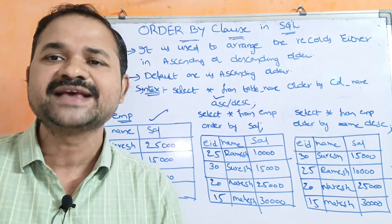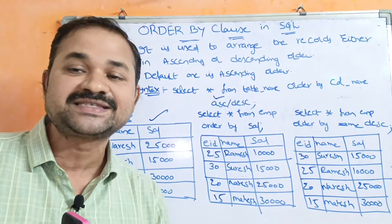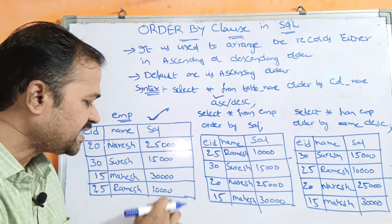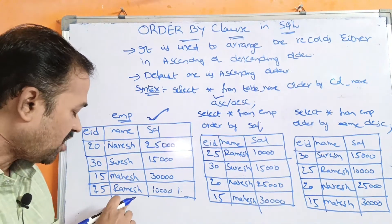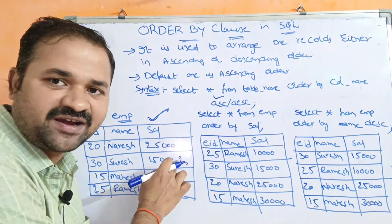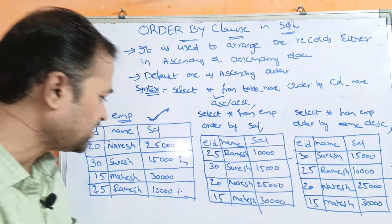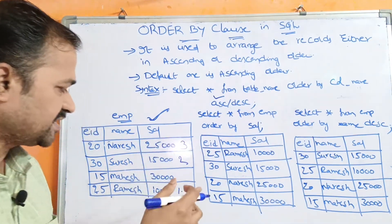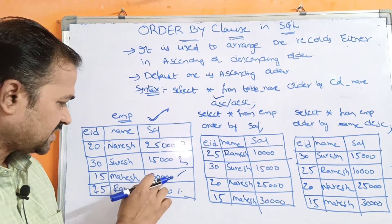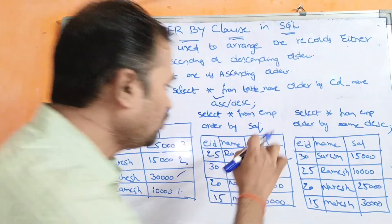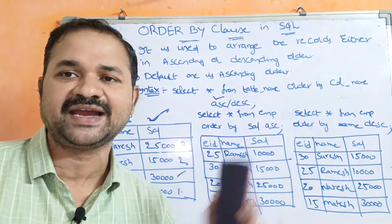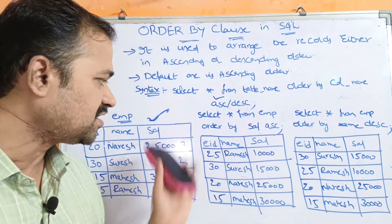So the records will be arranged in ascending order based on the sal column. Ascending order means incremental order — lower to higher. The salary values are 25000, 15000, 30000, and 10000, so 10000 is the least value. First this record will be displayed: 25 Ramesh 10000. Next, 15000 is the least remaining value, so 30 Suresh 15000 will be displayed. After that, 25000 comes next — that is 20 Naresh 25000. Finally, 30000: 15 Mahesh 30000 will be displayed. If you explicitly use ASC after the column name, the output will be the same.